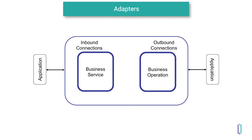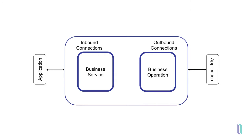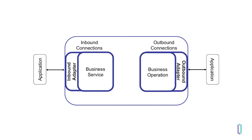Business services and business operations typically use adapters to handle the specific technology and protocol used to communicate with an application. An adapter that accepts data for a business service is called an inbound adapter. An adapter that works with a business operation to send data is called an outbound adapter. Although it is not required that a business service or business operation uses an adapter, most do. Business services and business operations with their associated adapters handle everything related to the connection, such as making the initial connection, retrying a message on failure, or timing out after a designated period of time.